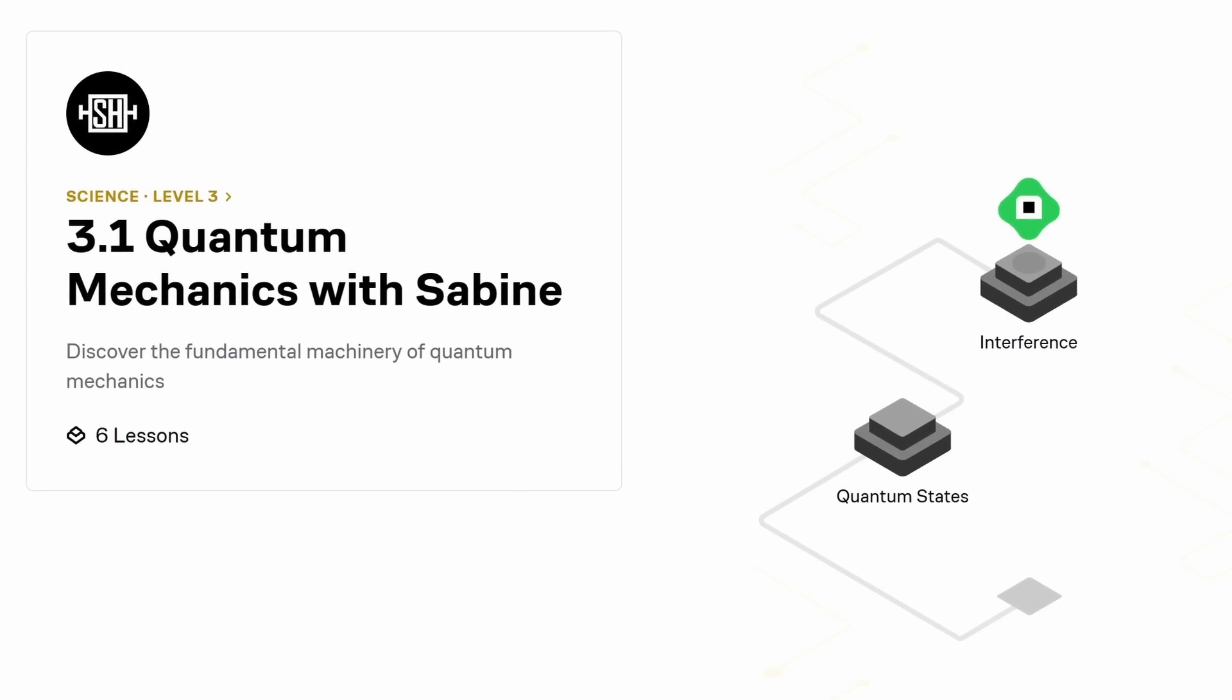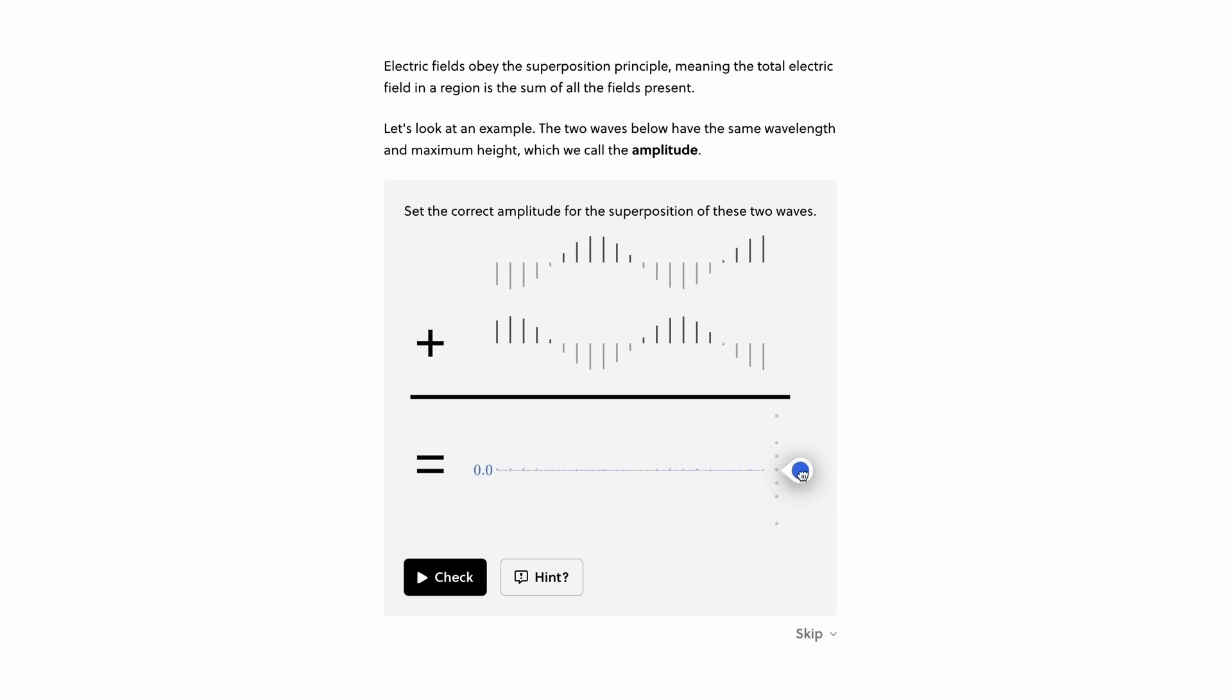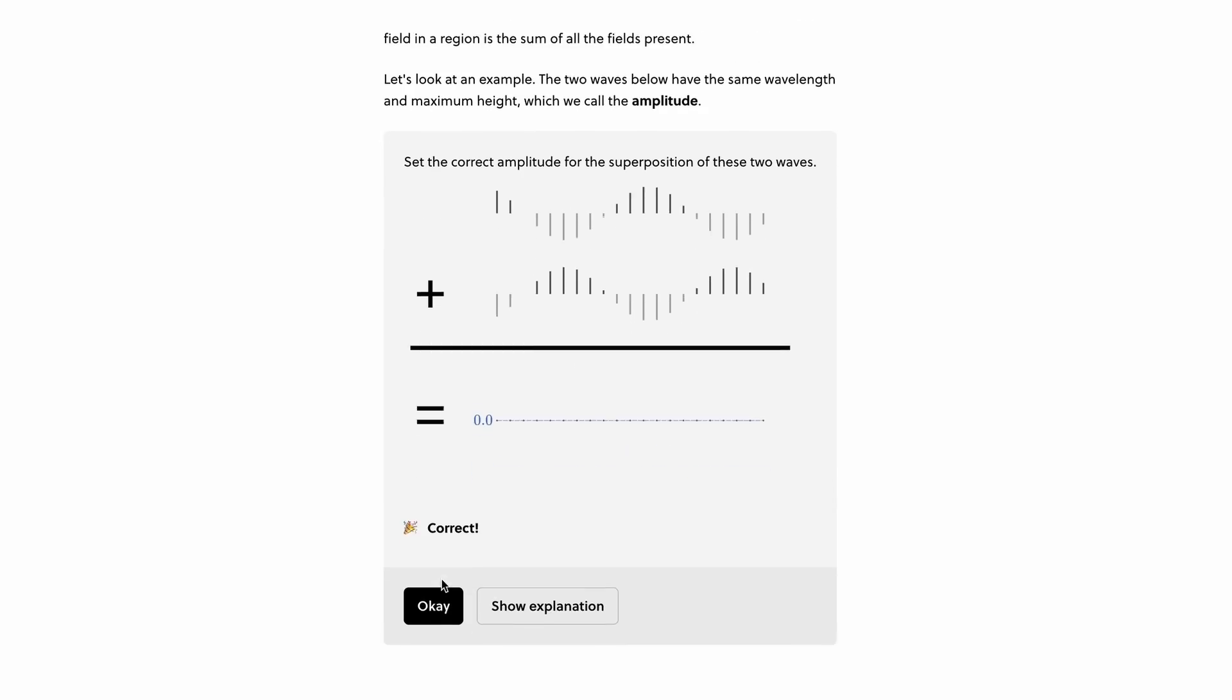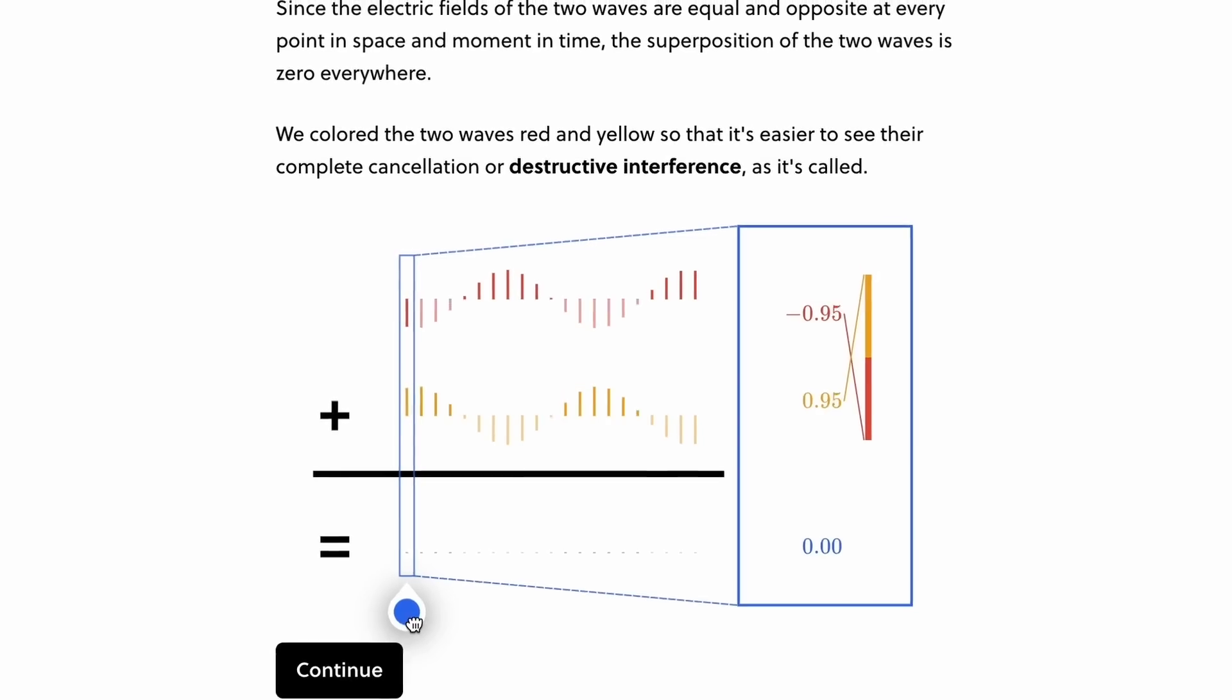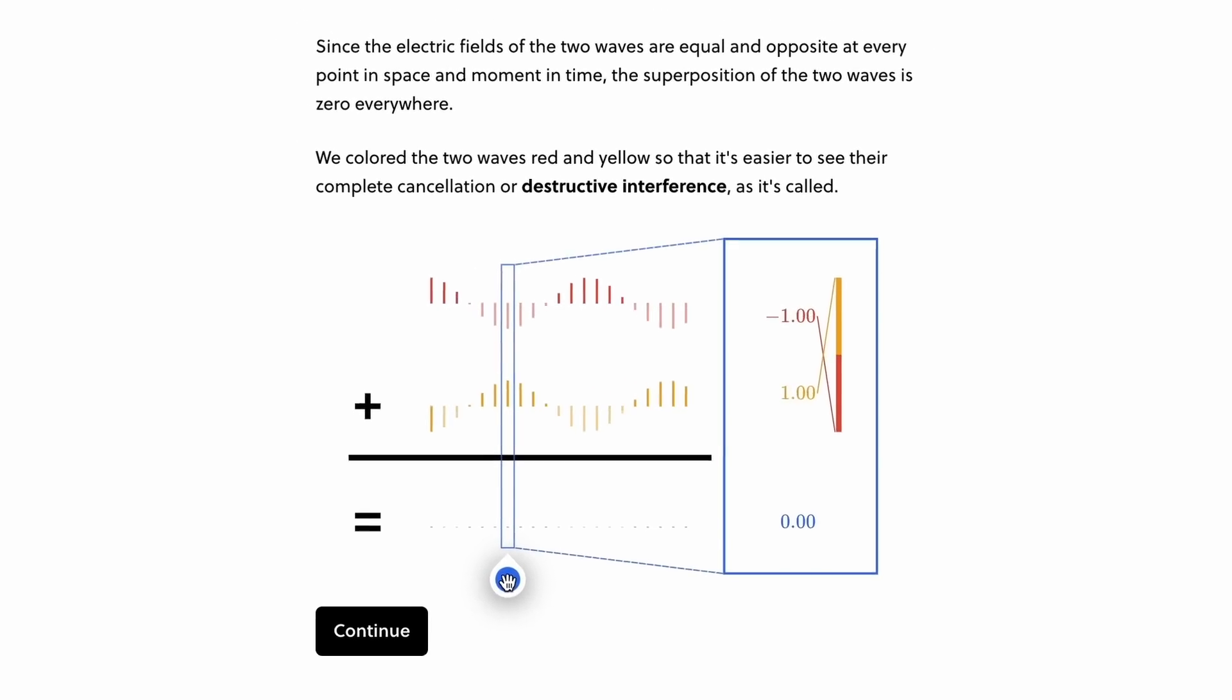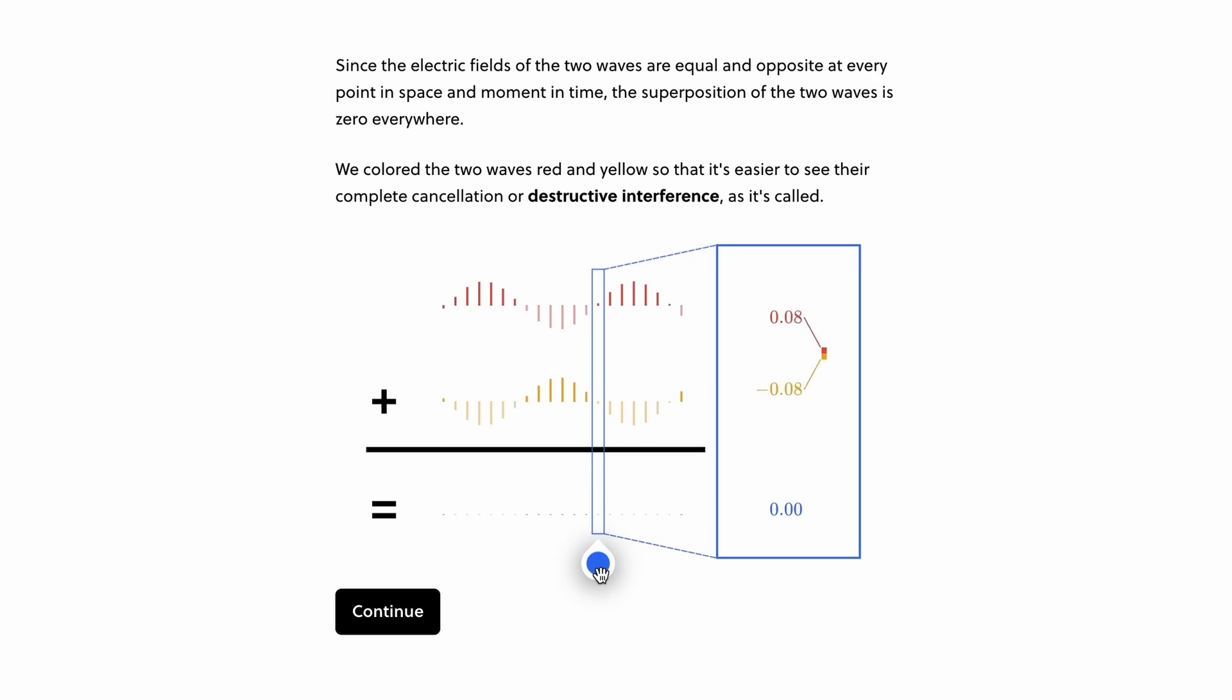That's an introduction to quantum mechanics. It'll help you understand what a wave function is and what the difference is between superpositions and entanglement. It also covers interference, the uncertainty principle and Bell's theorem. And after that, you can continue maybe with their course on quantum computing or differential equations.